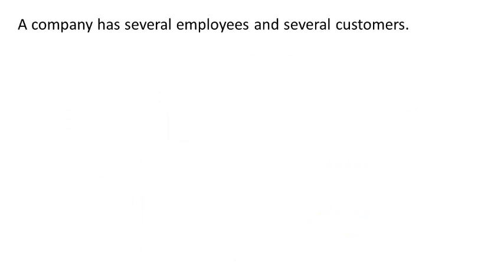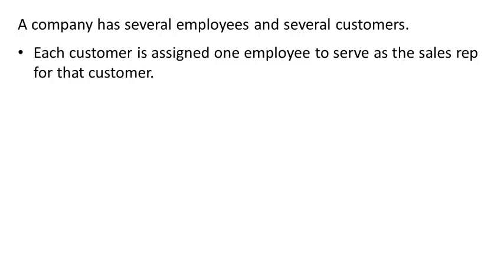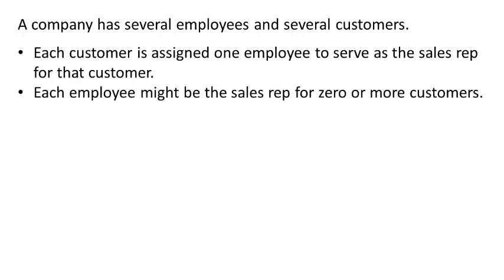Let's consider the next scenario. The company has several employees and several customers. Each customer is assigned to one employee to serve as the sales rep for that customer. Each employee might be the sales rep for zero or more customers. Each employee has a unique employee ID and each customer has a unique customer ID. Pause the video, draw the ER diagram, make up some attributes and the primary key for each, and see if key migration notation is useful here or not.